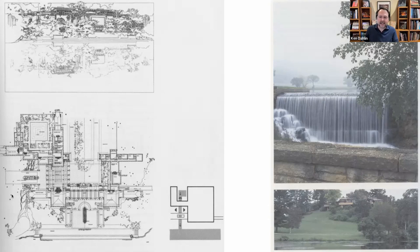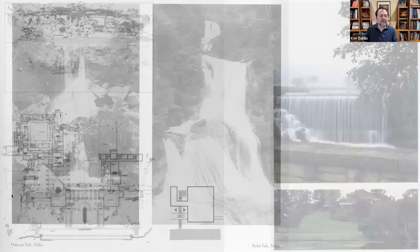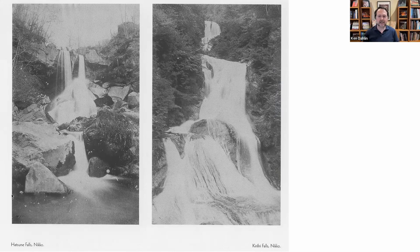On his return to Taliesin after visiting the Kaufman site, Wright reportedly wrote: "The visit to the waterfall in the woods stays with me and a domicile has taken vague shape in my mind to the music of the stream." On Wright's first trip to Japan in 1905, he took photos that later appeared in a book called Frank Lloyd Wright's 50 Views of Japan. Interestingly, some 25% of the photos in that album are of waterfalls, including two images taken in Nikko.